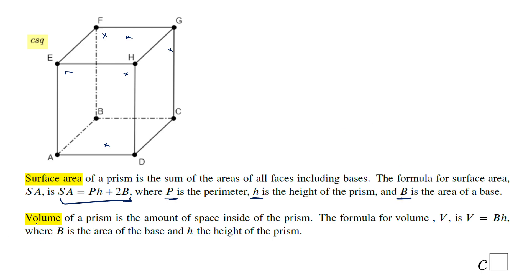The next thing is the volume. The volume is what you put inside a three-dimensional shape — in this case the prism. There is a formula: V equals area of the base times the height. For a rectangular prism, we have another one: length times width times height, which can also be used.